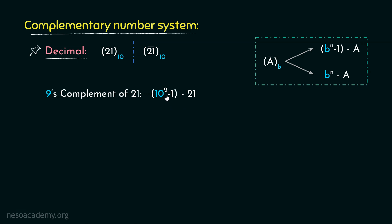Why 10 squared? Because decimal has the base 10 and 21 happens to be a two-digit number. 10 squared is 100 and 100 minus 1 is 99. So subtracting 21 from 99, that is the largest two-digit number in decimal, we obtain 78.